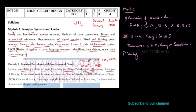What is the principle of duality? We also need to minimize Boolean expressions. There are canonical forms: Sum of Products (SOP) formula and Product of Sums (POS) formula.